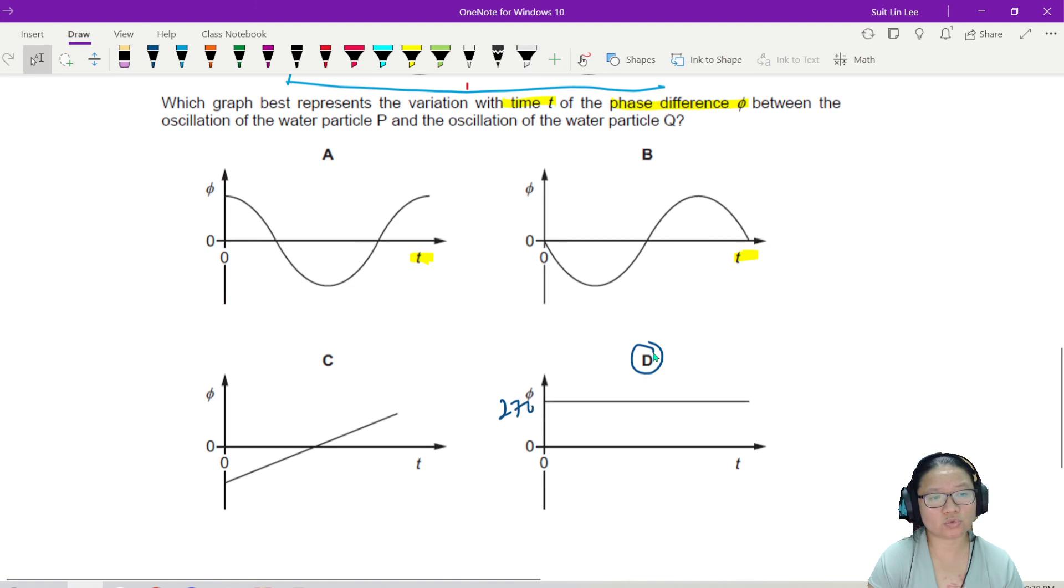If you want to, this is 270 degree. Okay, because 3 lambda over 4 is equivalent to 270 degree, one full cycle is equivalent to 360. Okay, so 3 quarter of a cycle is equivalent to 270.